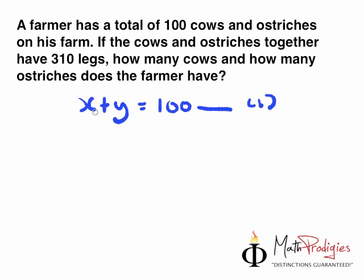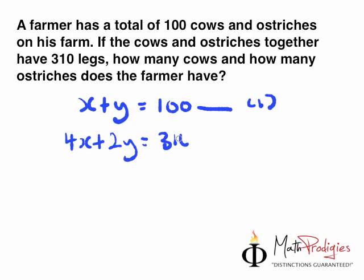It says if the cows and ostriches together have 310 legs — you've got to use your brain a bit here. Cows have four legs, so therefore it's 4x. And ostriches have how many legs? Not four, but two. The number of legs equals 310. Let's make it simpler — let's divide the whole thing by two. You will get 2x plus y equals 155.